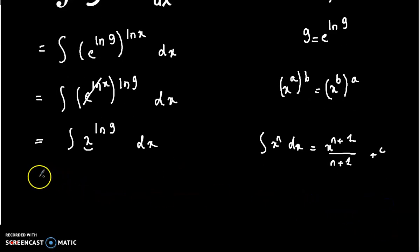So we can write it as x to the power ln 9 plus 1, divided by ln 9 plus 1, plus c.